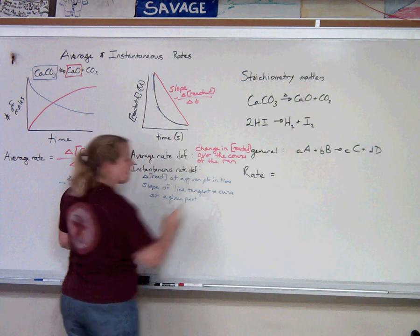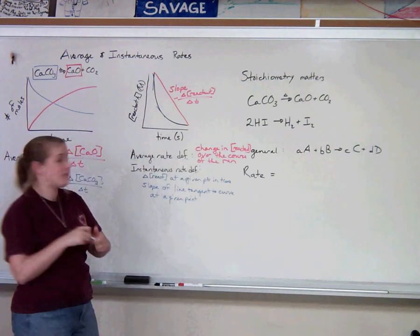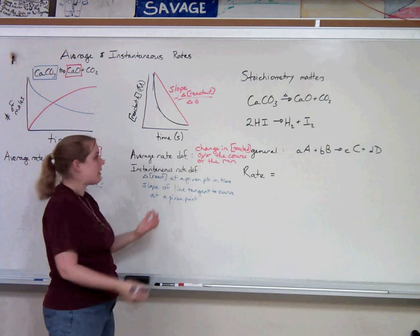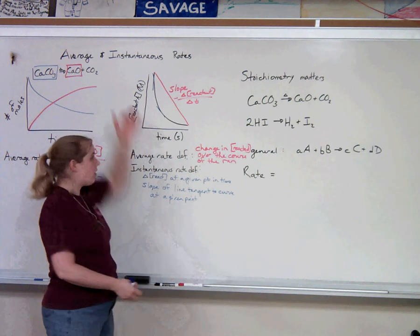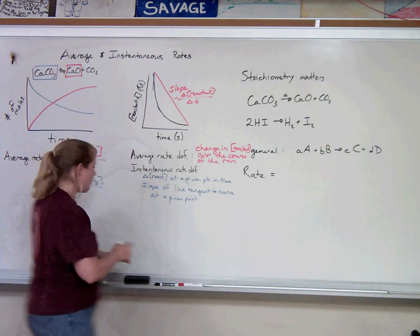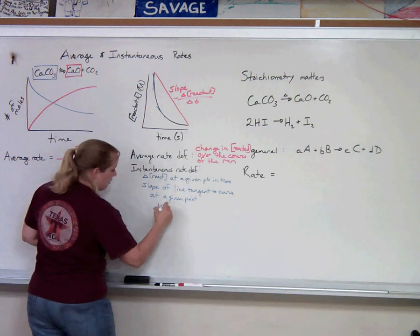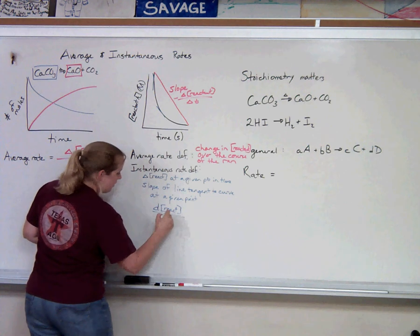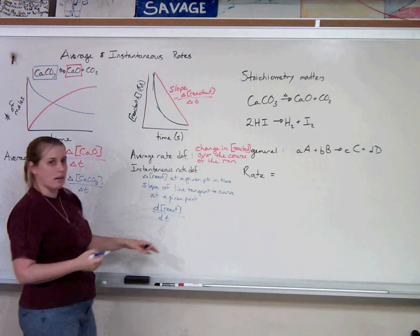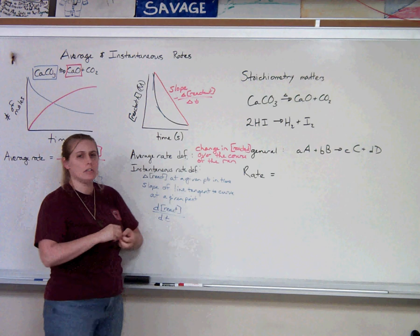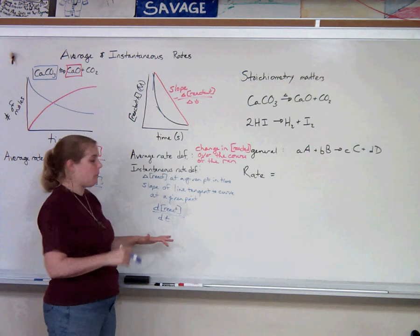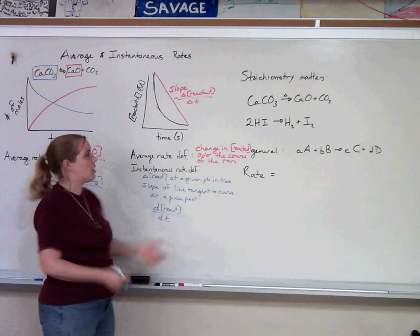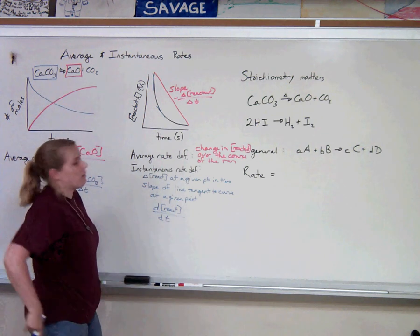Now, those of you who are in calculus do this a lot. You take the slope of lines tangent to curves at given points. That's called taking the derivative of the curve at that point. So it would be d-reactant over d-time, dy-dx. If you're not in calculus, don't worry about it. You do not need to know that in order to understand instantaneous rate and be good at it in chemistry. But I just want to throw that in there for the calculus people.